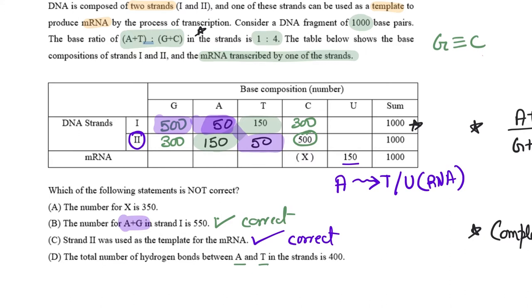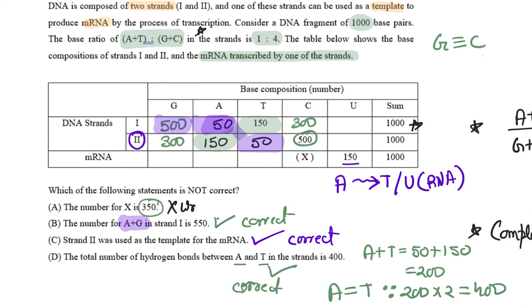In strand 1 there's 500 G and only 50 A. Now, total number of hydrogen bonds: A+T is 200 in the strands, so 200 times 2 because A and T have two hydrogen bonds—that's 400. The last one is wrong obviously because it has to be 300, not 350.